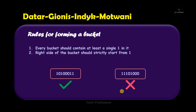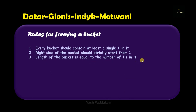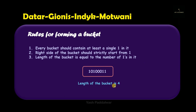The third rule is about calculating the length of the bucket. The length of the bucket is calculated by the number of ones inside it. For example, if a bucket contains the bits 1010011, it contains four ones, hence the length of the bucket will be four.